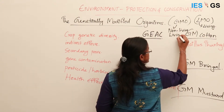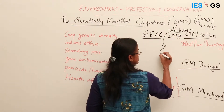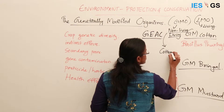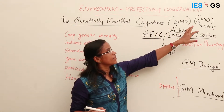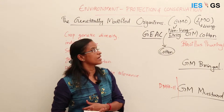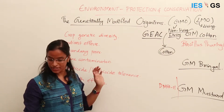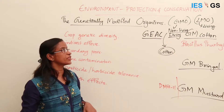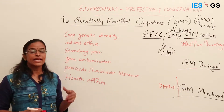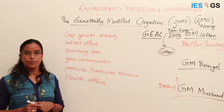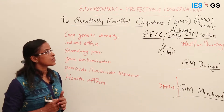GMOs can include organisms as such or products derived from them, like cotton, which is non-living. So GMOs include both living and non-living. Under the Convention on Biological Diversity, there is a protocol which regulates the transfer of living modified organisms to prevent any ill effects caused by gene modification.